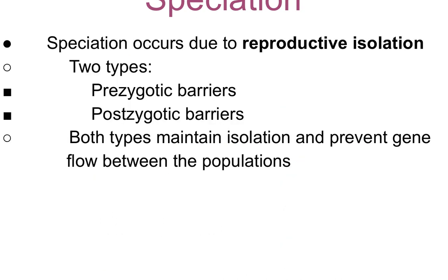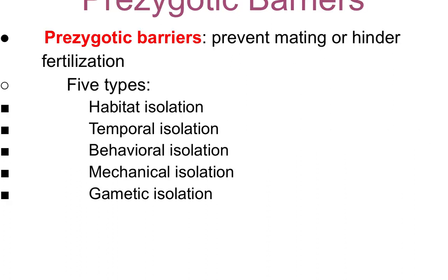Speciation occurs due to reproductive isolation. Prezygotic barriers are reproductive isolation types, along with postzygotic barriers. Both types maintain isolation and prevent gene flow between populations. Prezygotic barriers prevent mating and hinder fertilization. This could be related to habitat, temporal reasons, behavioral isolation, mechanical isolation, or a gametic barrier.